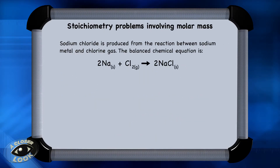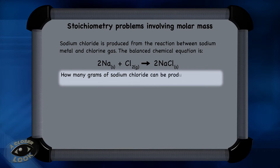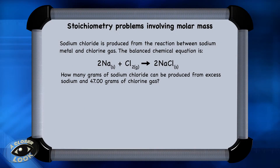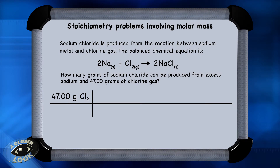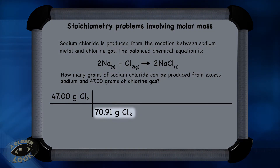This next problem involves the reaction used to create sodium chloride, or common table salt. Two moles of sodium react with one mole of chlorine to produce two moles of sodium chloride. The question asks how many grams of sodium chloride can be produced from excess sodium and 47.00 grams of chlorine gas. The first step is to put 47.00 grams of chlorine in the upper left-hand corner of the conversion chart, then bring down the units — grams of chlorine. Since we're converting to moles of chlorine gas, we use the molar mass of chlorine gas, which is 70.91 grams, placed in the denominator.